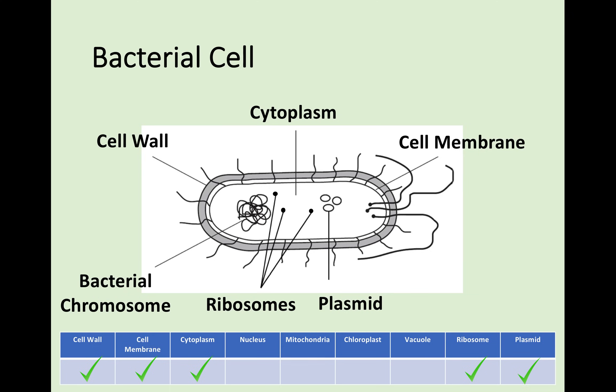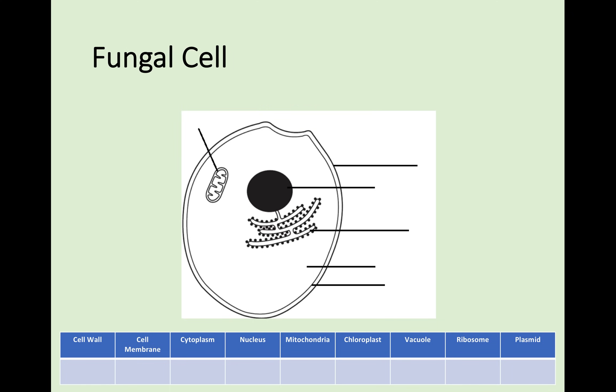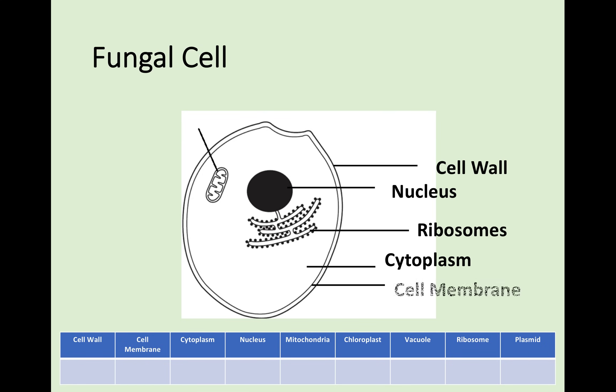Moving on to the final cell that you will need to know is the fungal cell. I like to think of the fungal cell as an animal cell with a cell wall because everything else is the same. There is the cell wall. The only cell that does not have a cell wall is the animal cell. There is that nucleus, ribosomes, a cytoplasm, a cell membrane, and hopefully by this point you can recognise a mitochondria. It is an animal cell, or looks like an animal cell, with a cell wall.